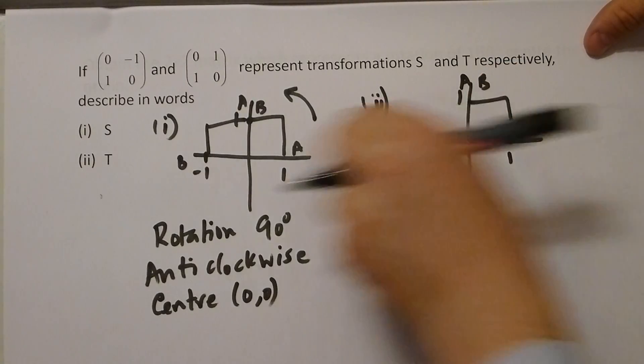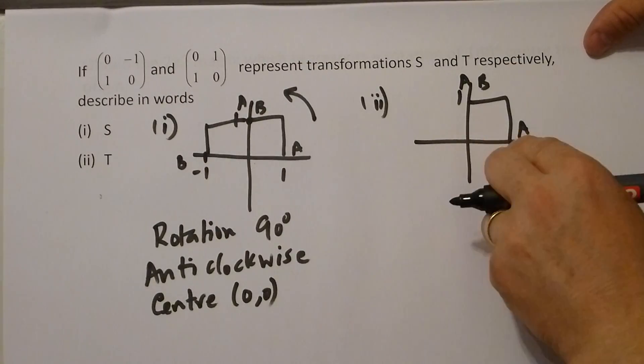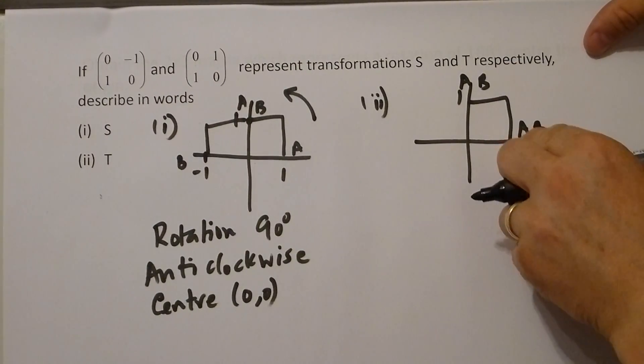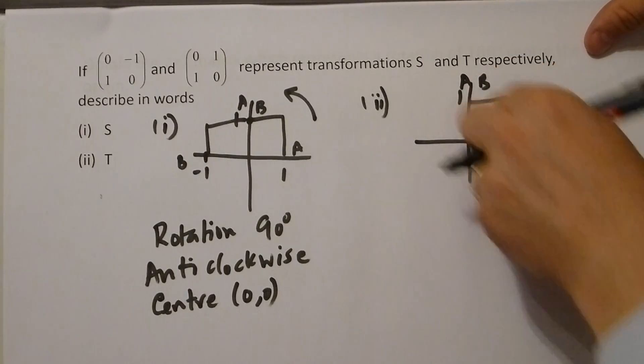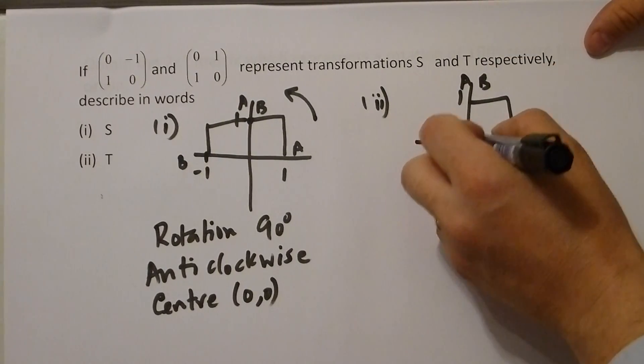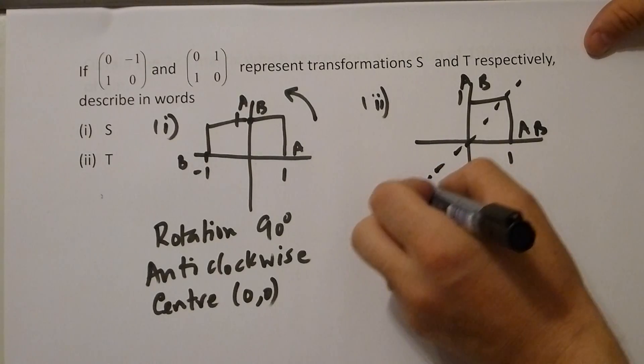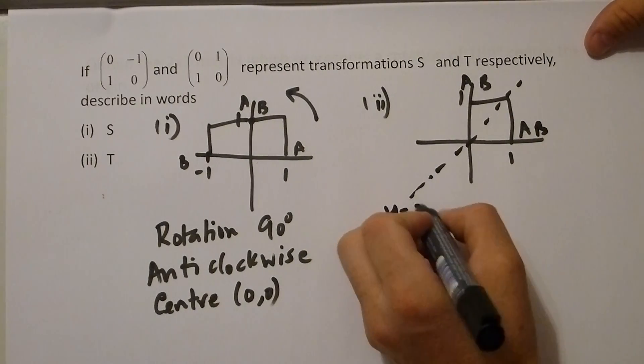However, B has moved to 1,0. 1,0. But if A has moved up there and B has moved down there, here we have a reflection in the line Y equals X.